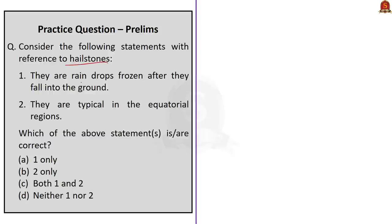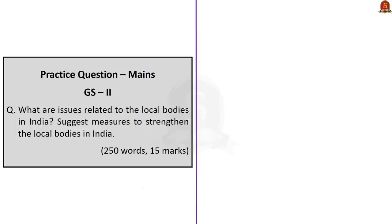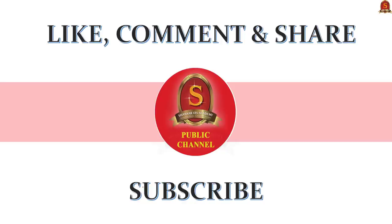The next question is about hailstones. First statement: they are raindrops frozen after falling to the ground — this is incorrect, as hailstones are not frozen raindrops; frozen rain falls as water and freezes near the ground, but hail falls as a solid. Second statement: they are typical in equatorial regions — this is also incorrect because large damaging hails fall most frequently in continental areas of middle latitudes like the USA and northern India, and are rare in equatorial regions. Both statements are incorrect, so the correct answer is option D: neither one nor two. A main question based on GS Paper 2 about local bodies can be answered in 250 words and posted in the comment section. With this we come to the end of today's news analysis.